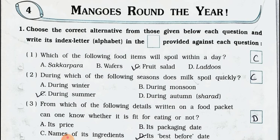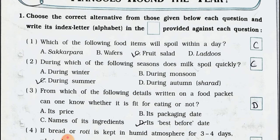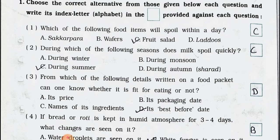Answer is Option C: Fruit salad. Question 2: During which of the following seasons does milk spoil quickly? A) During winter, B) During monsoon, C) During summer, D) During autumn. Answer is Option C: During summer.